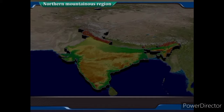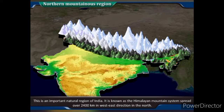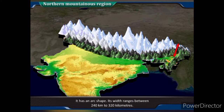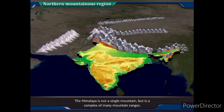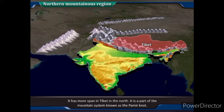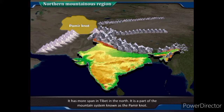Northern Mountainous Region: This is an important natural region of India. It is known as the Himalayan mountain system, spread over 2,400 km in the west-east direction in the north. It has an arc shape. Its width ranges between 240 km to 320 km. The Himalaya is not a single mountain, but is a complex of many mountain ranges. Going towards east from Afghanistan, it extends up to Myanmar via India, Nepal and Bhutan. It has more span in Tibet in the north and is a part of the mountain system known as the Pamir Knot.